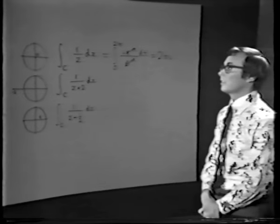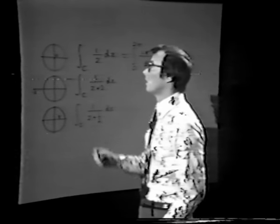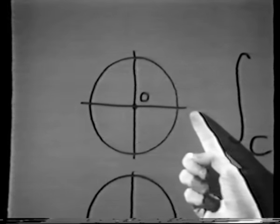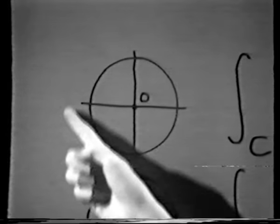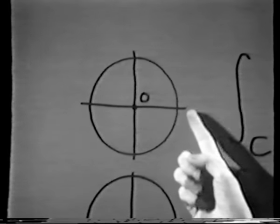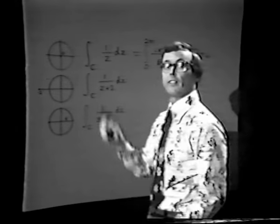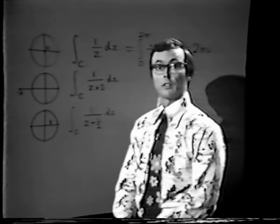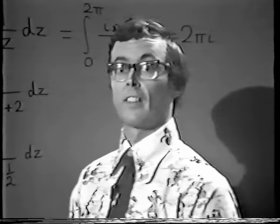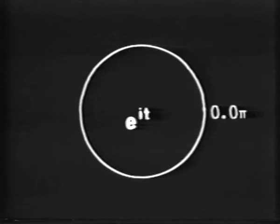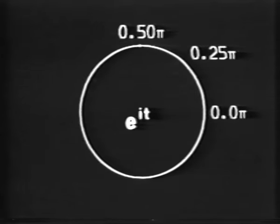There are two things to notice. We chose our parametrization e^(it), with t going from 0 to 2π, in such a way that we go exactly once around the unit circle and we go anticlockwise. This is the convention we'll always take when integrating around simple closed contours. If we take other parametrizations — going around several times, or backwards — then in general we may get different answers. With z = e^(it), as t increases from 0 to 2π, the image point moves anticlockwise around the circle.